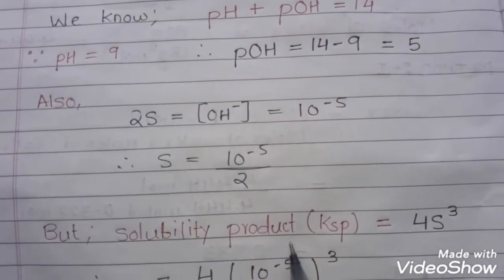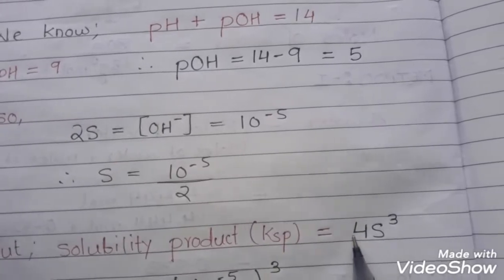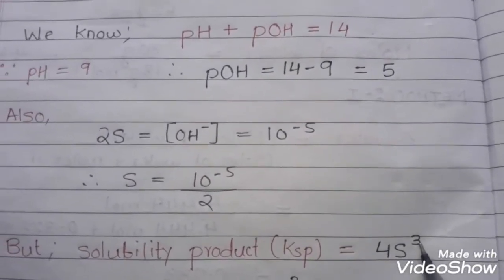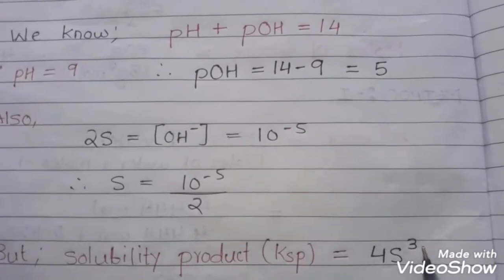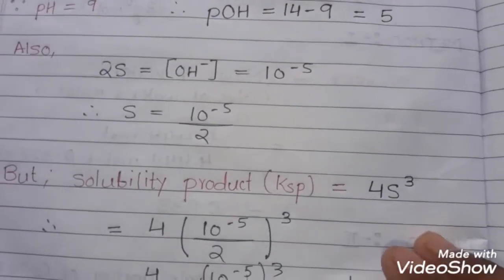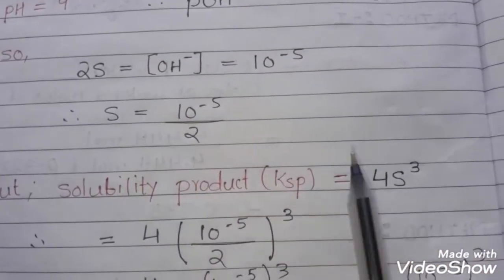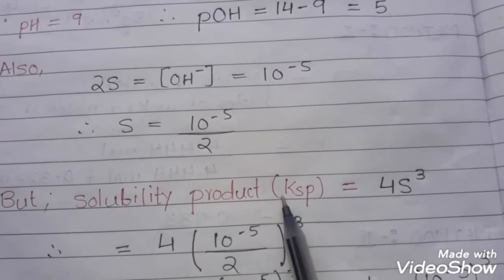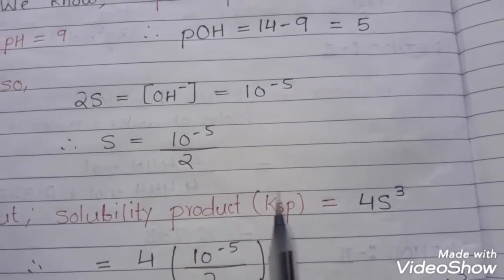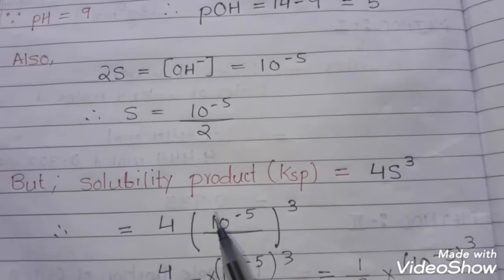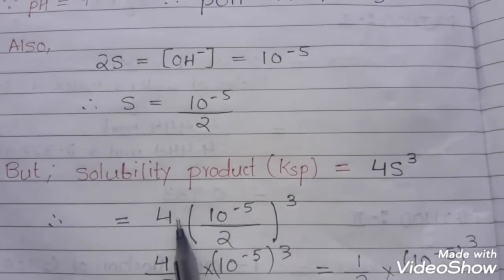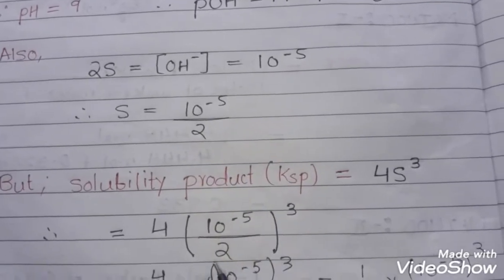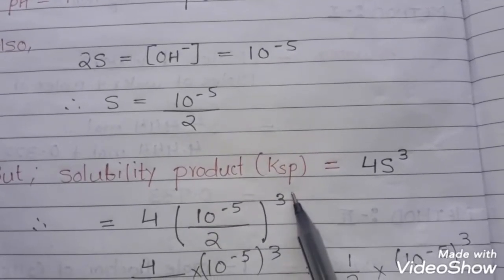The solubility product KSP is nothing but 4s³. So KSP equals 4s³. We have got the value of s, so we will simply substitute the value of s and get the solubility product. The value of s is 10 raised to minus 5 by 2. We will substitute this and take the cube of it.